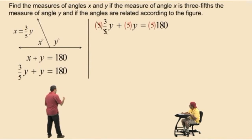Well, notice the 5's cancel out, leaving us with 3y. And we bring down our work. What's 5 times 180, Charlie? 900. Very nice.